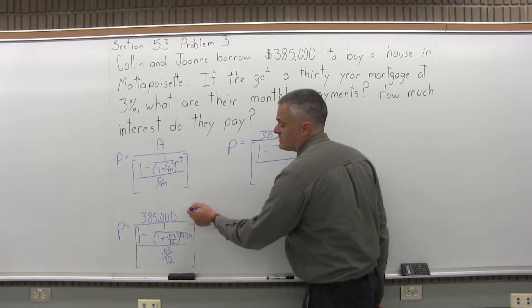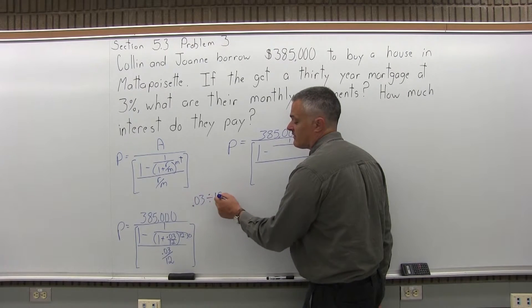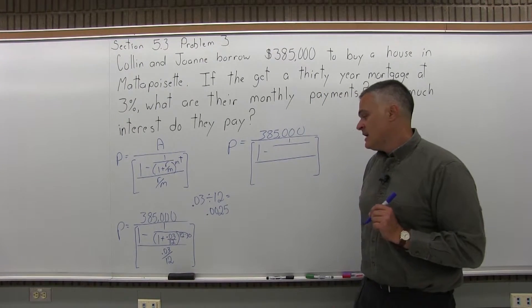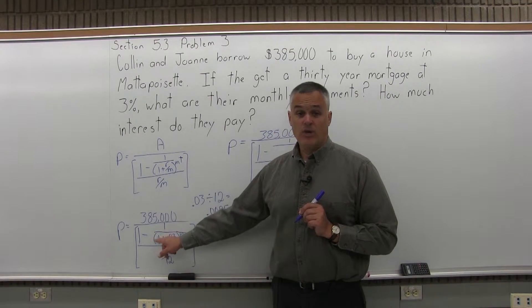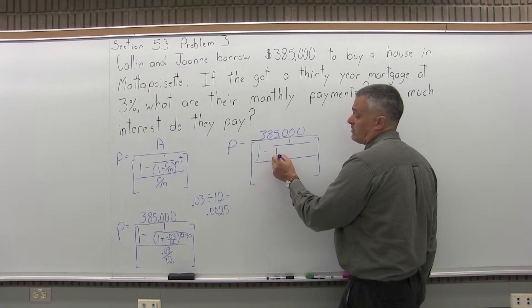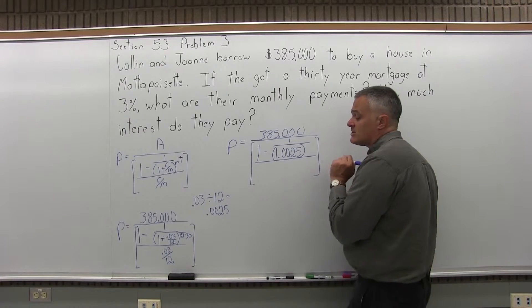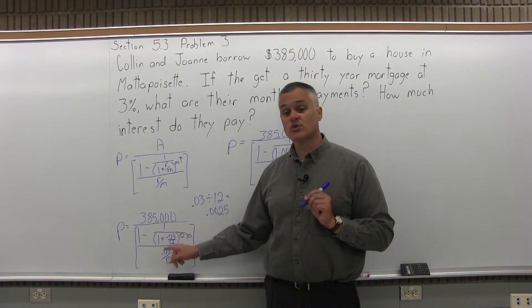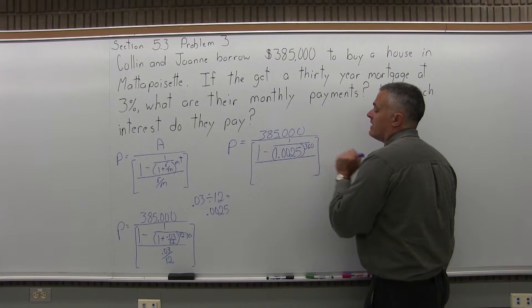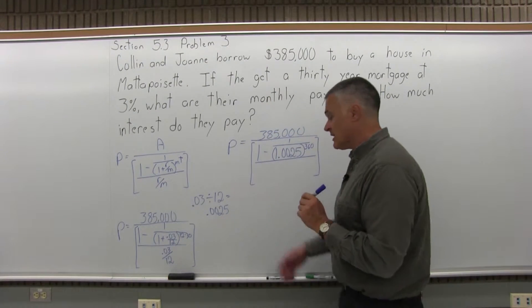If you don't see it, or you think that's what it is, but you're not positive, just use your calculator. Do .03 divided by 12 equals, and the calculator will definitely tell you it's .0025. And there's a 1 plus in front of that .0025, so 1 plus .0025 is 1.0025. And that 1.0025 is in parentheses, it's raised to an exponent of M times T, which for this problem is 12 times 30. 12 times 30 is 360. And in the denominator of the brackets, I still have R over M, which is .03 over 12, same result, .0025.